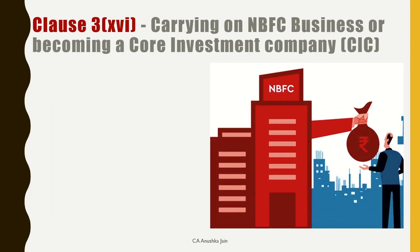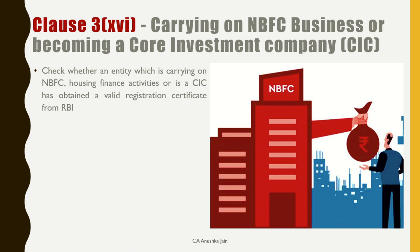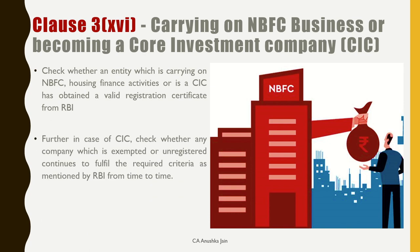Next new clause is 16 which deals with companies carrying on NBFC business or becoming a core investment company (CIC). CICs are a special type of NBFC jis ka total assets ka 90% investments hota hai and investments ke andar bhi 60% equity shares investment hote hai. Basically, CIC ka ek hi purpose hota hai invest karna aur ye group companies mein share hold karti hai — for example, Tata Sons holds majority shares of Tata Group companies; that is a CIC. CARO 2020 requires an auditor to check whether an entity carrying on NBFC or housing finance activities, or a CIC, has obtained a valid registration certificate from the Reserve Bank of India. In case of CIC, auditor also needs to check whether any company which is exempted or unregistered continues to fulfill the required criteria as mentioned by RBI. If there are a group of CICs, then the auditor needs to provide the number of CIC companies under that group.